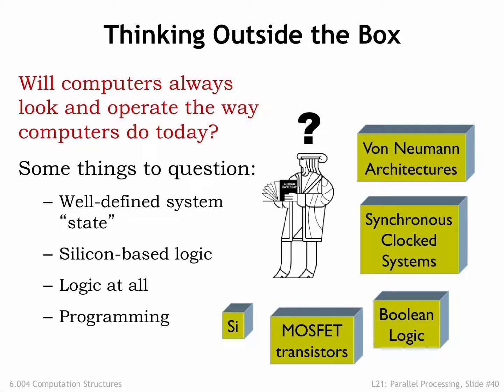Again, using living organisms as useful models, programming may be replaced by learning, where stimulus and feedback are used to evolve system behavior. In other words, systems will use adaptation mechanisms to evolve the desired functionality rather than having it explicitly programmed. This all seems the stuff of science fiction, but I suspect our parents feel the same way about having conversations with Siri about tomorrow's weather.